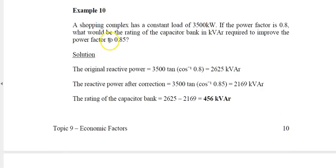Example 10: A shopping complex has a constant load of 3500 kilowatt. If the power factor currently is 0.8, what would be the rating of the capacitor bank in kVAR required to improve the power factor to 0.85? The original reactive power is 3500 tangent cos inverse 0.8, which gives 2625 kVAR. The reactive power after correction is 3500 tangent cos inverse 0.85, which gives 2169 kVAR.